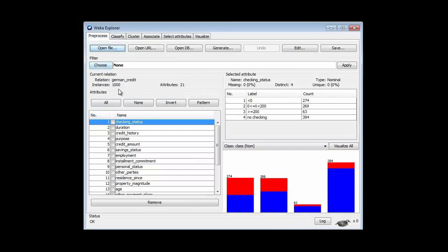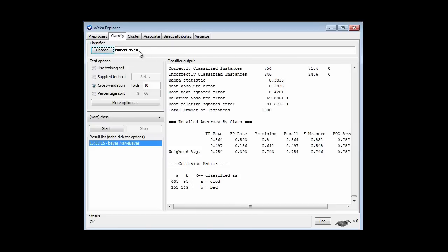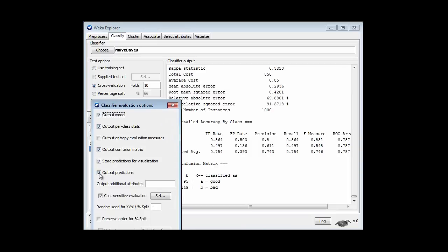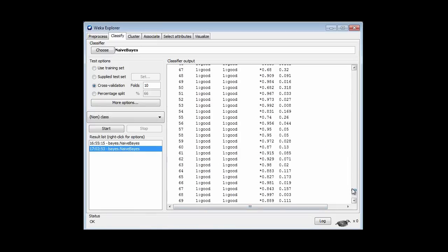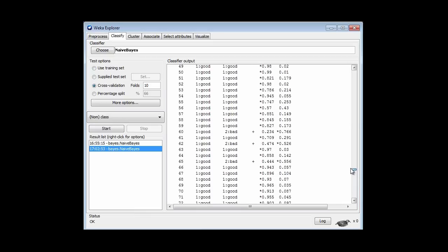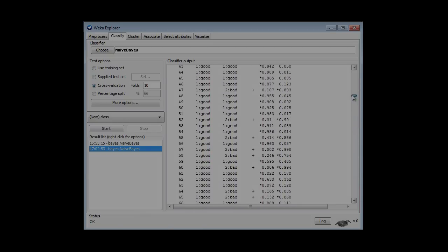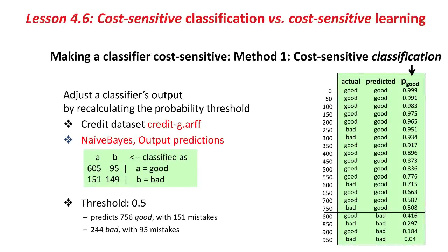So I've opened here the German credit dataset with a thousand instances, and I'm going to classify this with Naive Bayes. I get this matrix here, and if I set output predictions, which I've set, then I can see in the output the actual predictions for the one-thousand instances. I've written those down here, not all one-thousand, I've just taken every fifty, and I've got twenty results here. The actual class of the instance, the predicted class of the instance, and the Naive Bayes' probability that the instance is a good one rather than a bad one. I've sorted this list by the probability column.